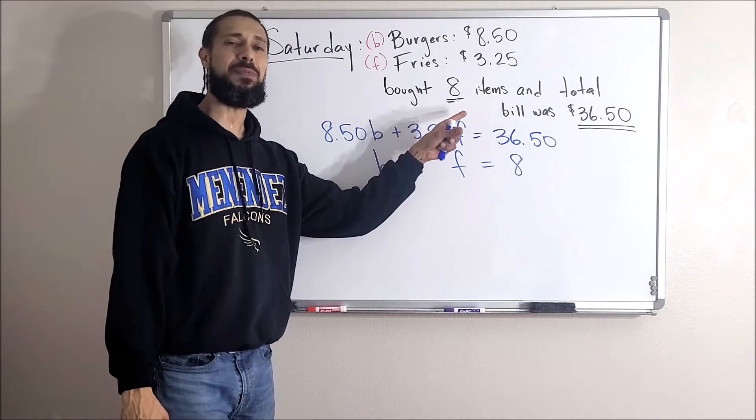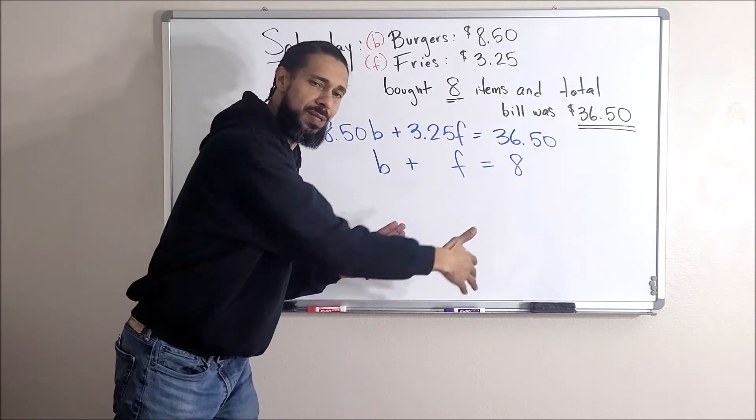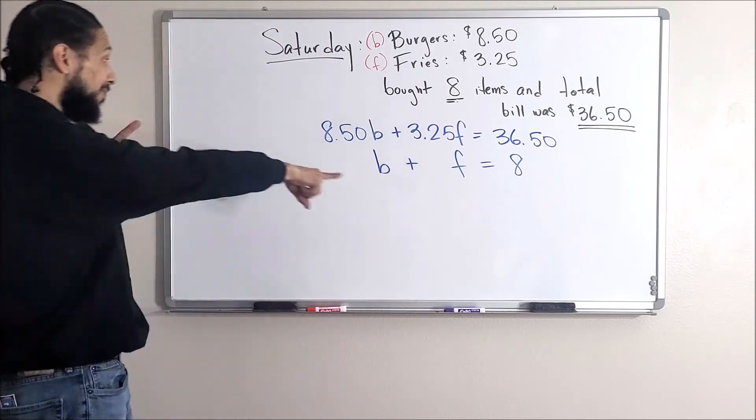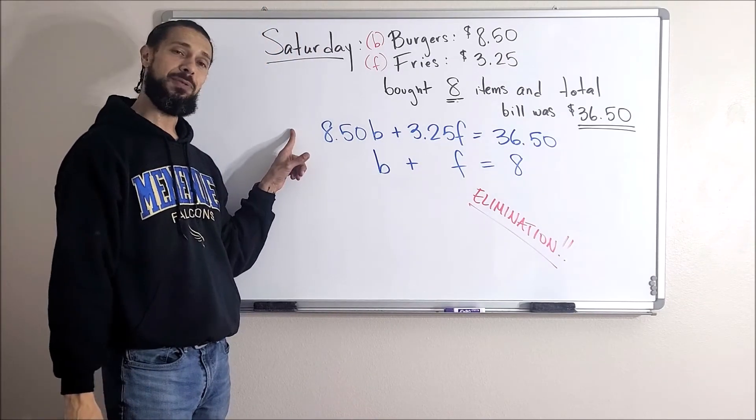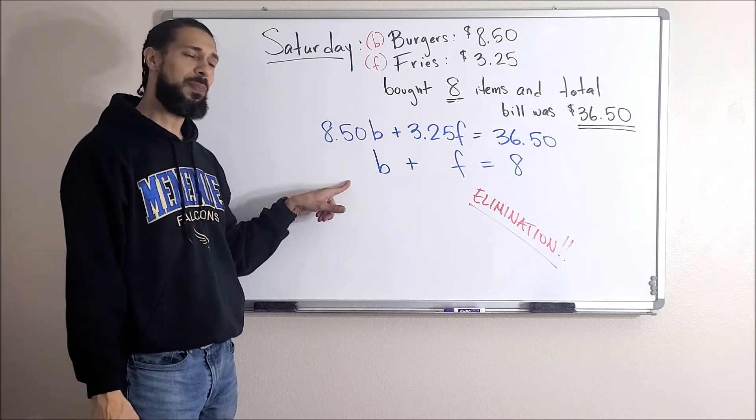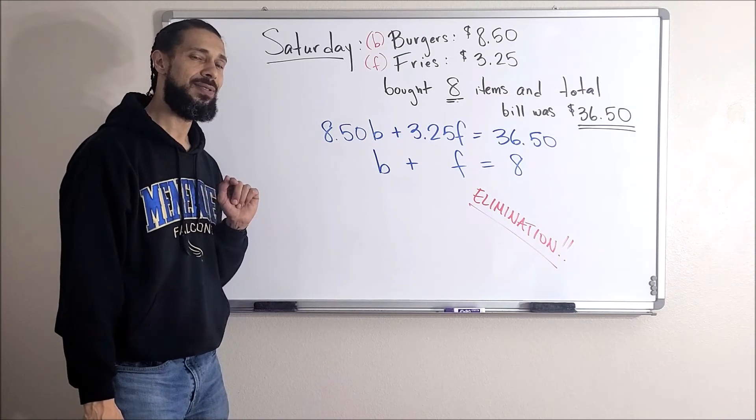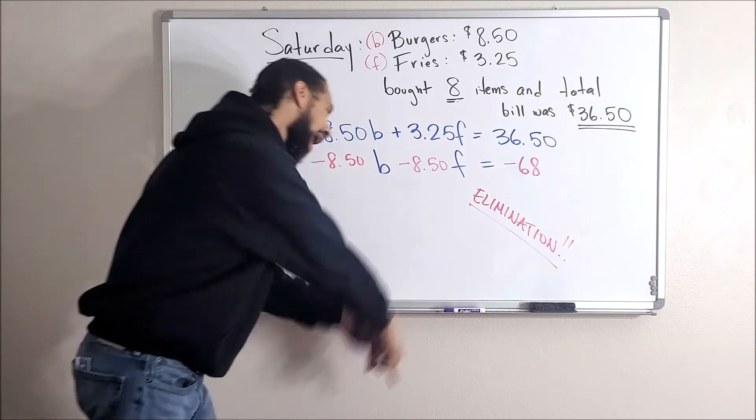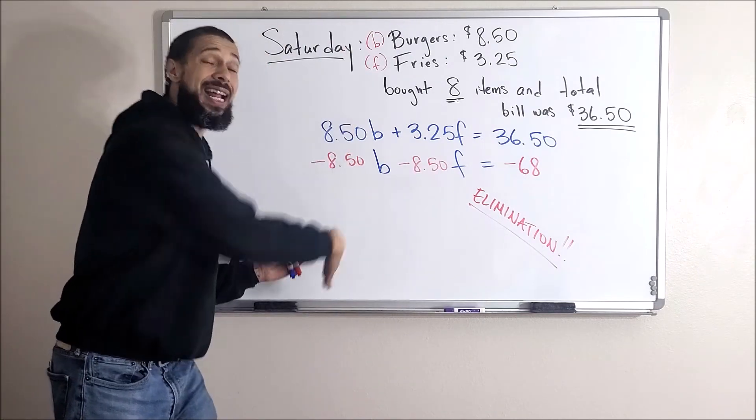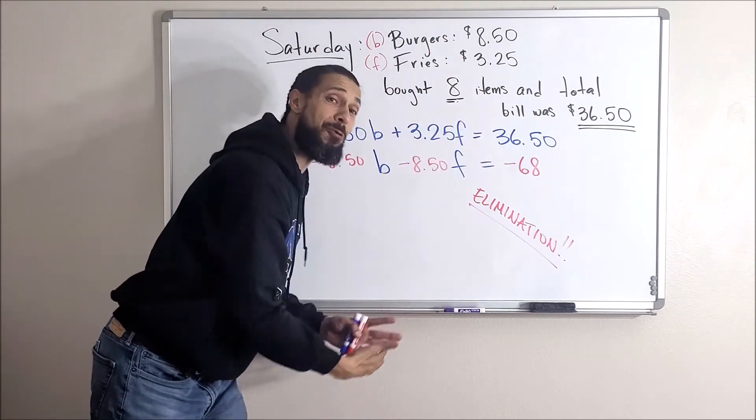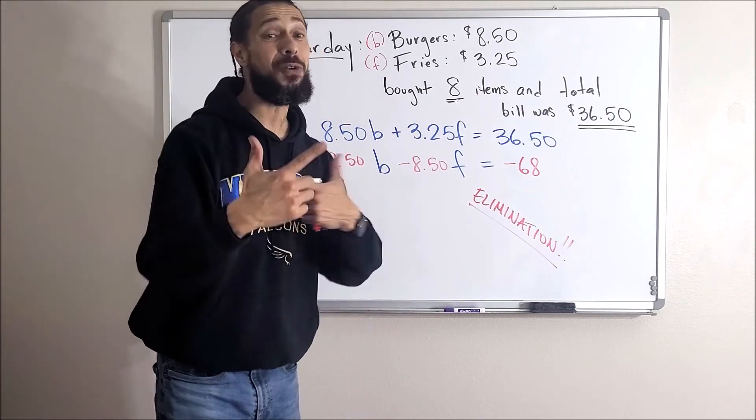So now I got two equations. Look at how they're set up: b's, f's, numbers. This looks like elimination to me. Now all I got to do is figure out what I can multiply this by so that it would cancel. Couldn't I just multiply this entire equation by negative 8.5? Let's do that. Just like that. Now you're elimination pros by now, so now you just add these down and cancel, add those down and plug it back in. After you do that, you'll find out that we ordered two burgers and six fries.